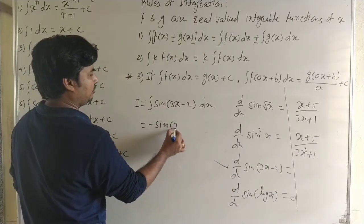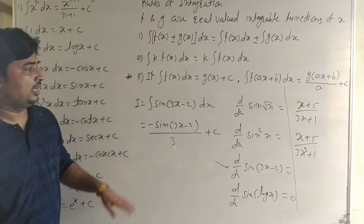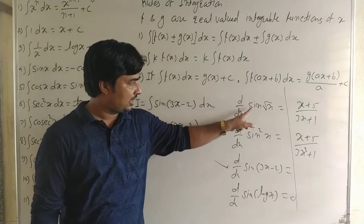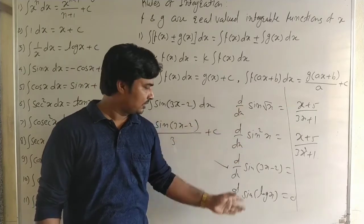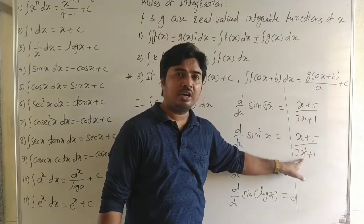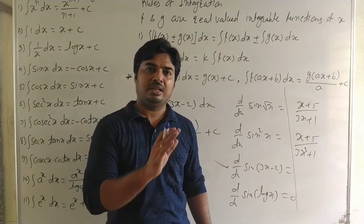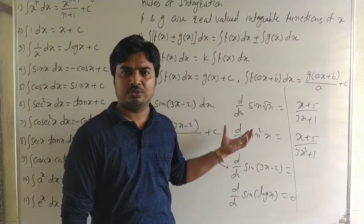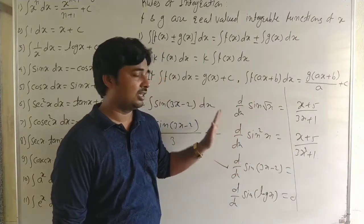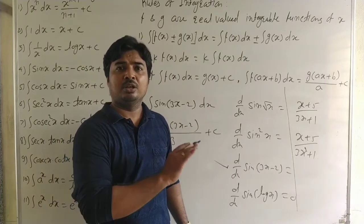So integral of −sin(3x − 2) upon 3 + C is the answer for this composite function. The key point: for differentiation, there is one standard method — direct differentiation with rules for composite functions, u/v rule. But for integration, every different type of function requires a different method, and we will learn all those methods in this chapter on indefinite integrals.